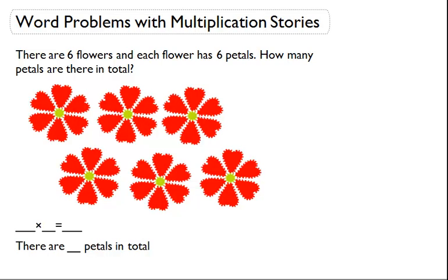There are six flowers and each flower has six petals. How many petals are there in total?